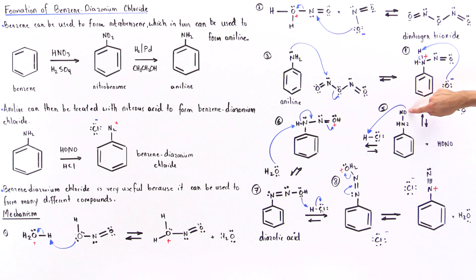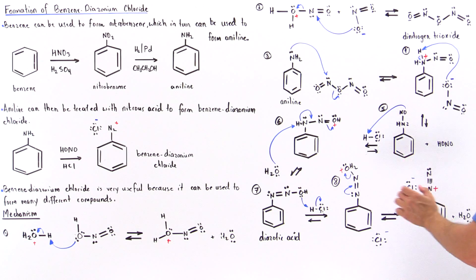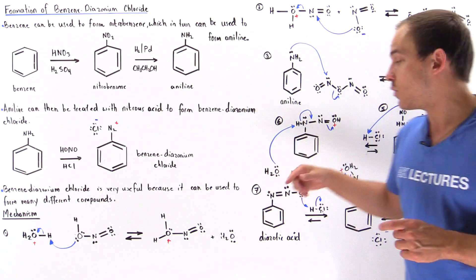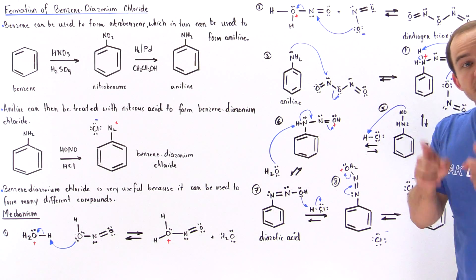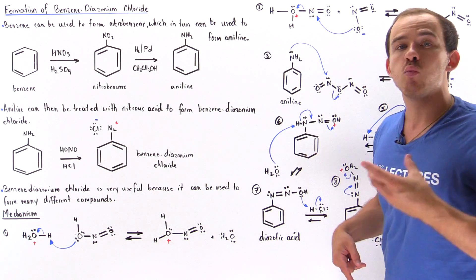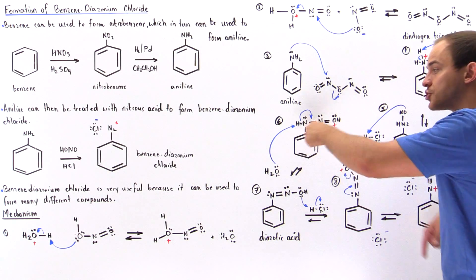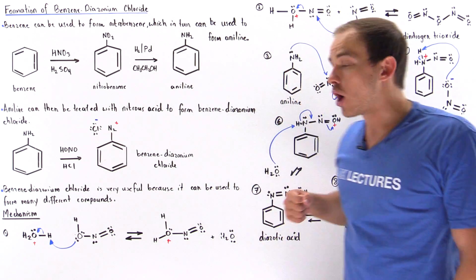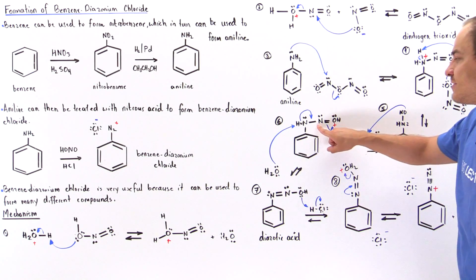A lone pair of electrons on the oxygen grabs the H from HCl, forming a chloride ion and a molecule that now contains an H atom on the oxygen, giving that oxygen a positive charge. In the next step, we want to remove the final H atom attached to our nitrogen. A water molecule uses its lone pair of electrons to take away that H, leaving two electrons on the nitrogen. Those two electrons form a pi bond between the two nitrogens, kicking off the pi bond between the nitrogen and the oxygen.